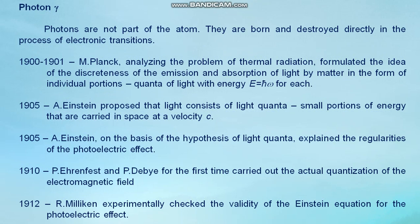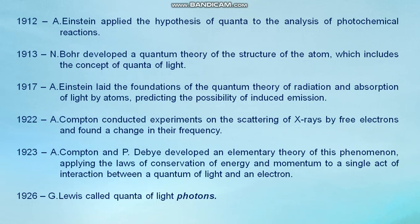In 1910, Einstein and Debye for the first time carried out the actual quantization of the electromagnetic field. In 1912, Millikan experimentally checked the validity of the Einstein equation for the photoelectric effect. In 1912, Einstein applied the hypothesis of the quanta to the analysis of photochemical reactions. In 1913, Bohr developed a quantum theory of the structure of the atom which includes the concept of the quanta of light. In 1913, Einstein laid the foundation of the quantum theory of radiation and absorption of light by atoms, predicting the possibility of induced emission.